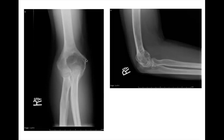One of your differentials for an epiphyseal lucent lesion is going to be a chondroblastoma, especially in kids and young adults. That's the age range in which these occur.